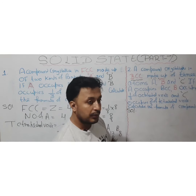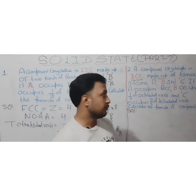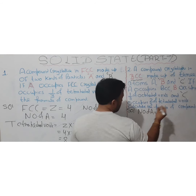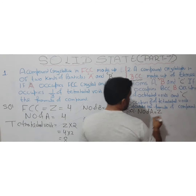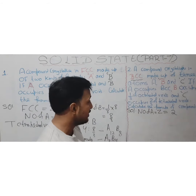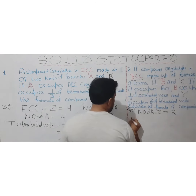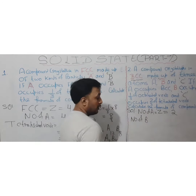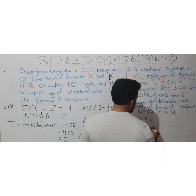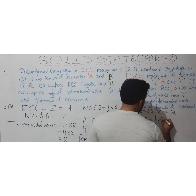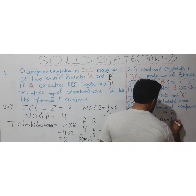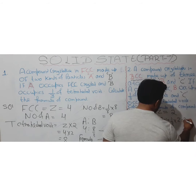Number of A = Z = 2 (since BCC has Z = 2). For B: it occupies one-third of octahedral voids. Octahedral voids = Z = 2, so number of B = (1/3) × 2 = 2/3.